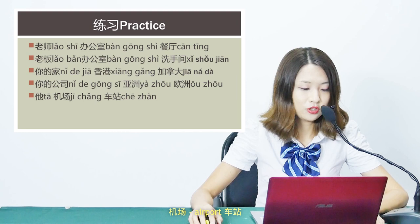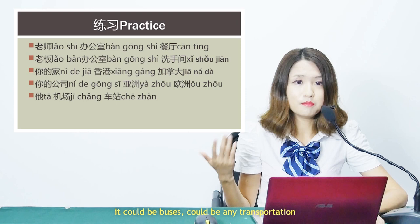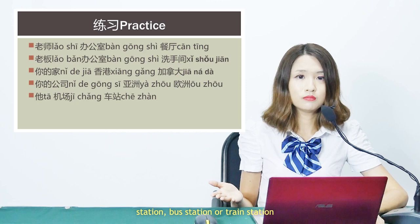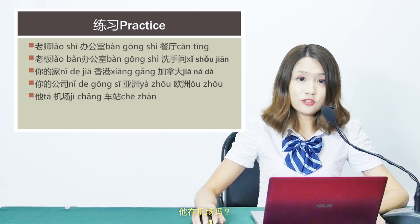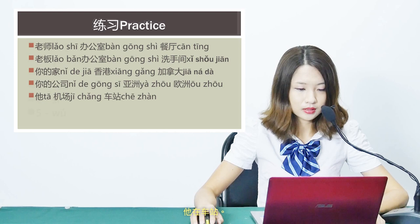最后一个 — last one. Person: 他 (he). Place 1: 机场 (airport). Place 2: 车站 (bus or train station). 车 means vehicle — it can be train, car, bus, or any road transportation; 站 is station. 他在机场吗? — Is he at the airport? 他不在机场 — He is not at the airport. 他在哪里? — Where is he? 他在车站 — He is at the station.